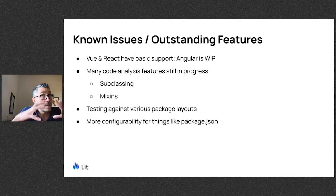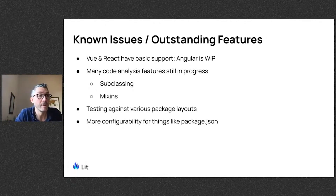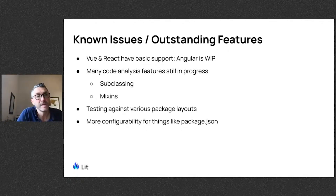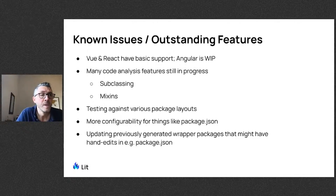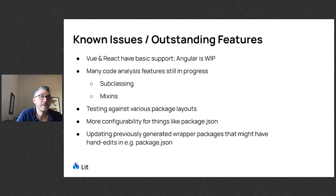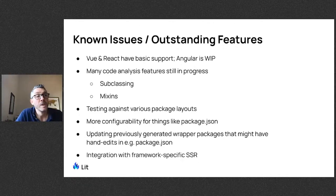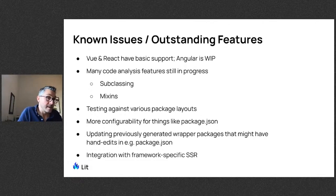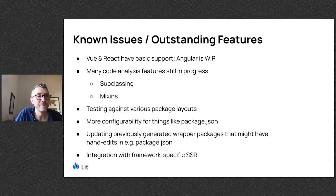The wrapper generators actually generate NPM packages for your components, so you can publish the Vue component separate from your Web Component if that's a goal. Because of that, we generate some boilerplate like package.json, and we know we'll need to make those more configurable. For any boilerplate we spit out, we expect we'll need features that allow updating previously generated wrapper packages that might have hand edits in them. Additionally, we need to make sure that the client-side wrappers and the server-side SSR wrappers all play well together, as Augustine gave a talk on the SSR framework integrations work happening in Labs.